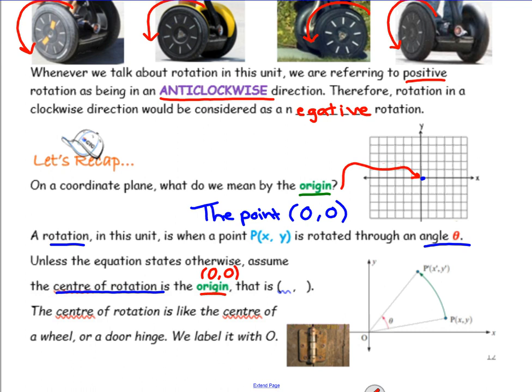You're probably wondering what I mean by the center of rotation. The center of rotation is like the center of a wheel — the middle center where things rotate around. Or a door hinge: a door will rotate around that hinge when you open and close it, or a wheel will rotate around the center of the wheel. We tend to label the center of rotation with O.